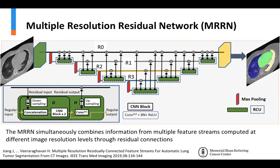Such residual feature combination was done to improve the stability of our deep training network. The residual connection unit, or RCU, takes in a residual input from one of the preceding higher resolution feature streams after appropriate downsampling and features computed from the immediately preceding CNN layer or RCU, and then concatenates these two features before processing them through CNN blocks. The residual output of the RCU is passed back to the feature stream, and the regular output is passed to the next RCU or CNN layer. In other words, the MRN simultaneously combines information from various feature streams computed at different resolution levels, which helps preserve different levels of spatial context for segmentation.